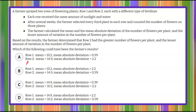Welcome back. We are comparing flowering plants that a farmer had in rows one and two. We were told that each row received the same amount of sunlight and water, so we have a fair representation that both rows were treated fairly. After several weeks, the farmer selected every third plant in each row and counted the number of flowers, which means there was a fair and random sampling.